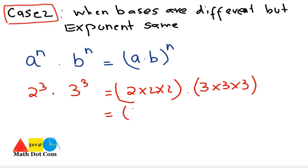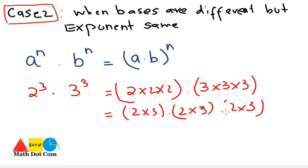For example: 2 into 3, multiplied four times. We pair them and convert to exponential form by writing 2 into 3 raised to the power 3, since the pair appears three times. This is how you handle the case where the bases are different but the exponent is the same.